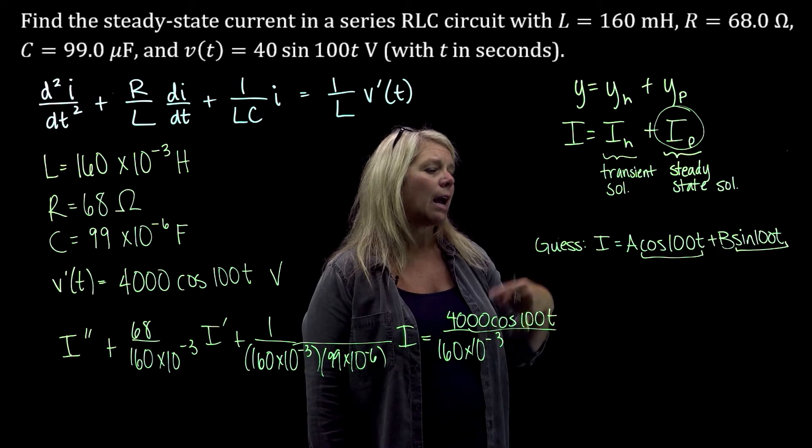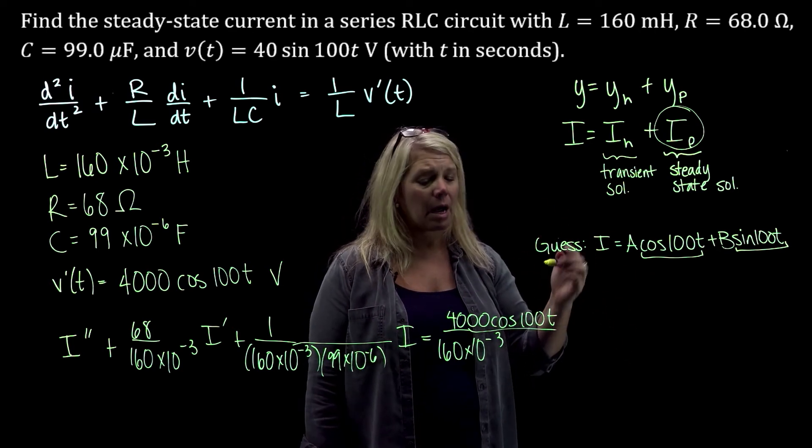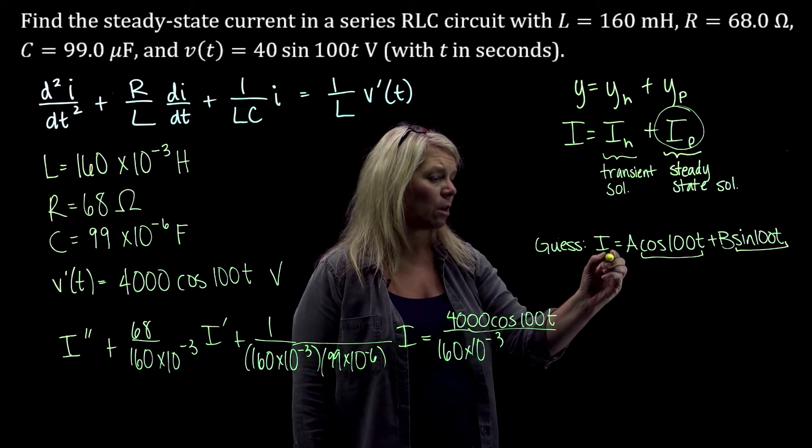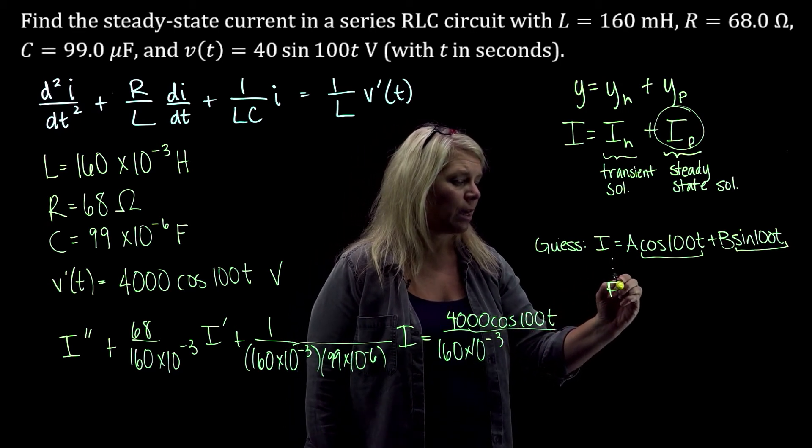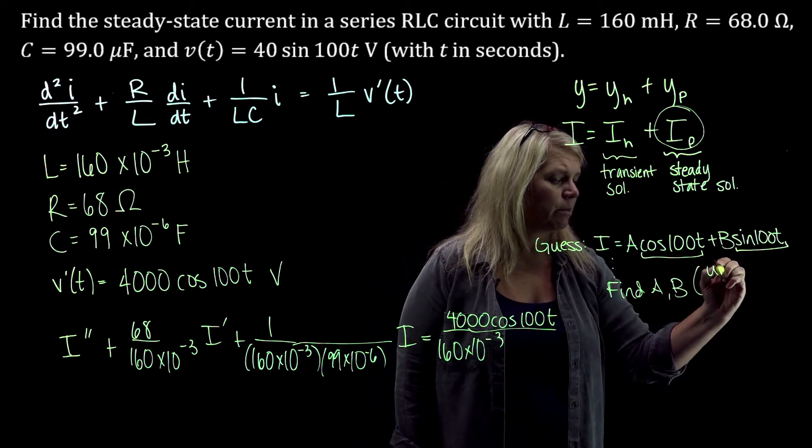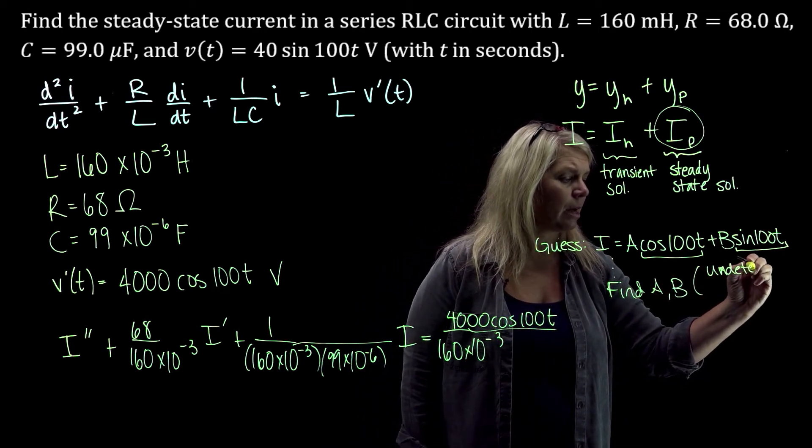You then differentiate your guess. Find I prime and I double prime. Plug it into the differential equation. You get your system of equations. You solve that. So you find your a and your b. And again, that's using the method of undetermined coefficients if you need to look that up.